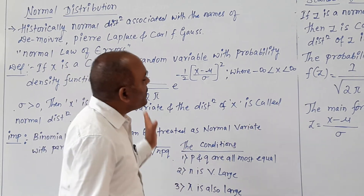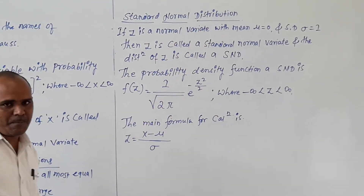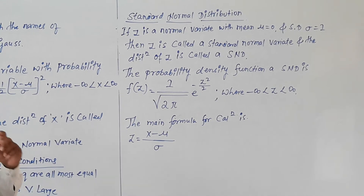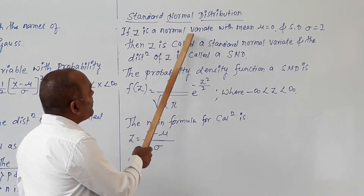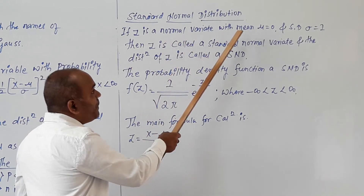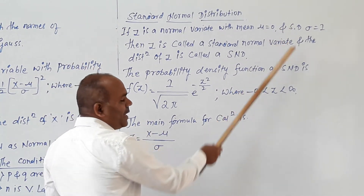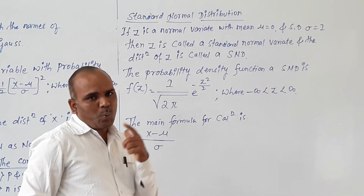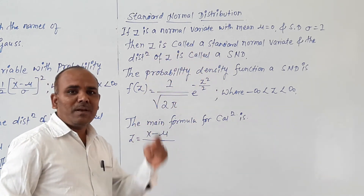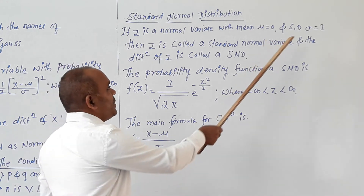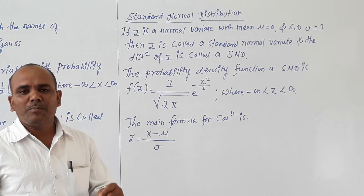One more concept comes under this: Standard Normal distribution. If z is a normal variable with mean mu equal to 0 and standard deviation sigma equal to 1, then z is called a standard normal variable and the distribution of z is called a Standard Normal distribution.